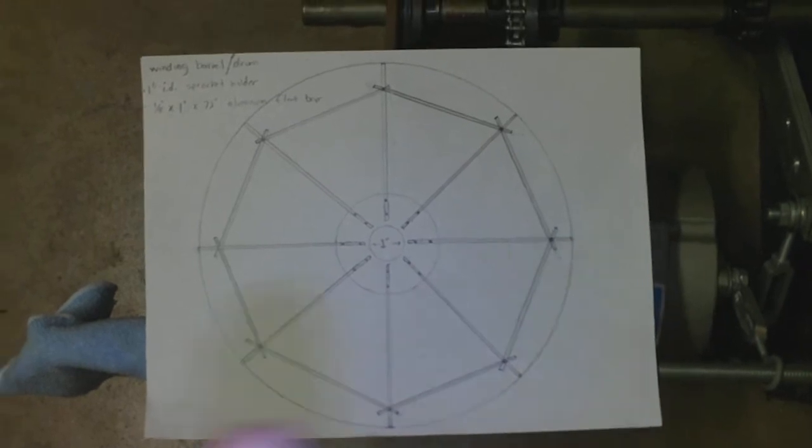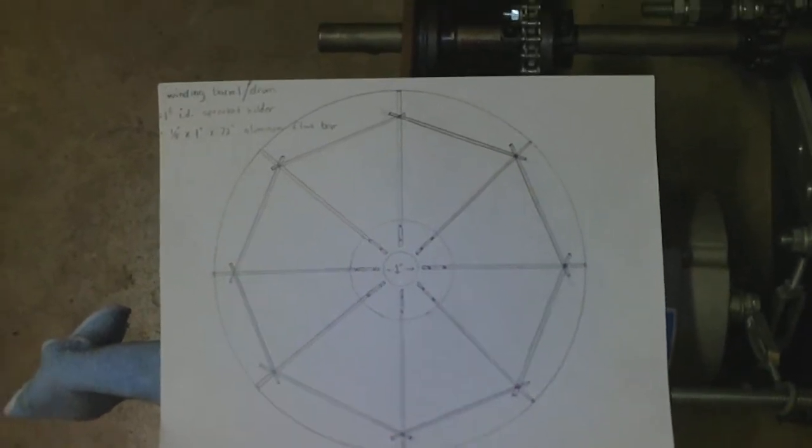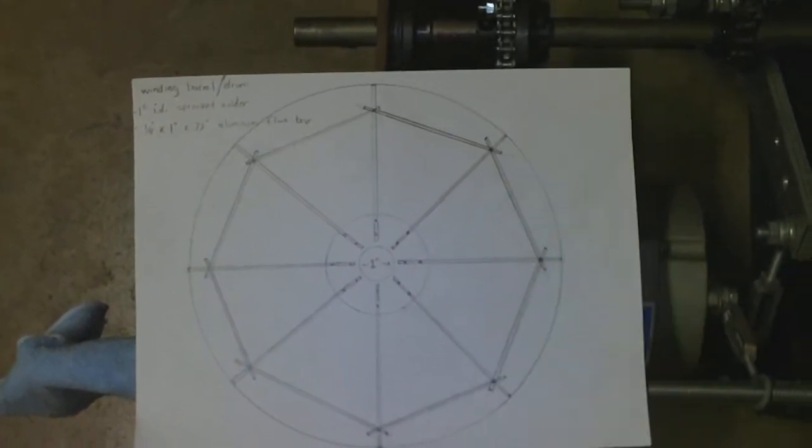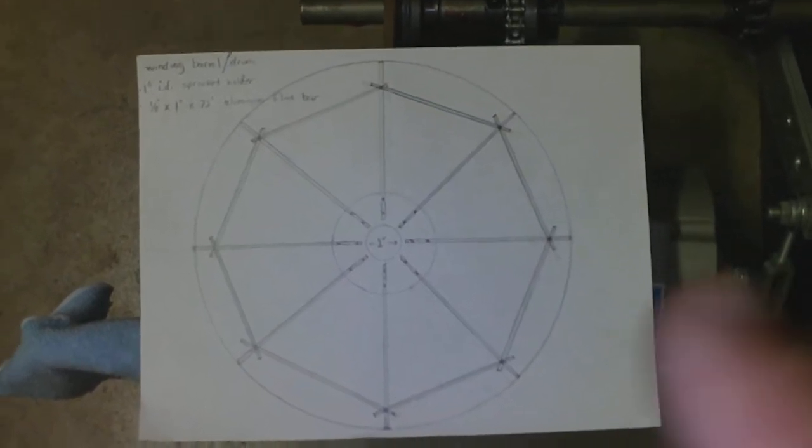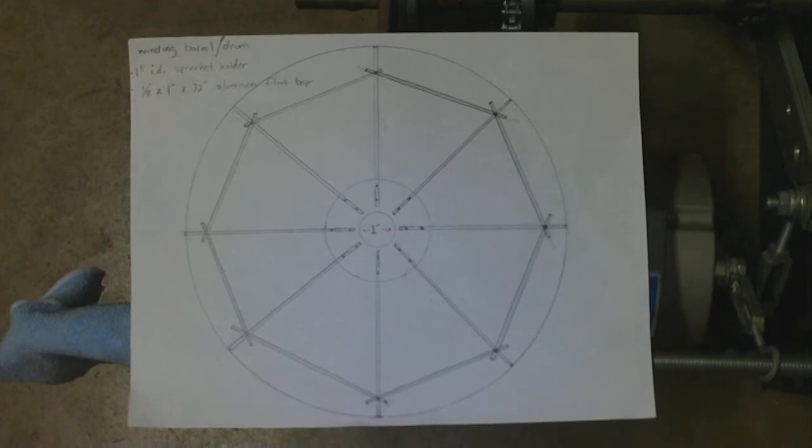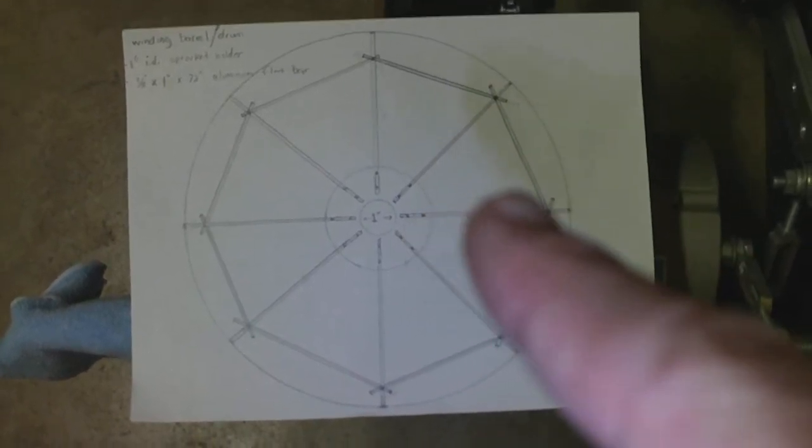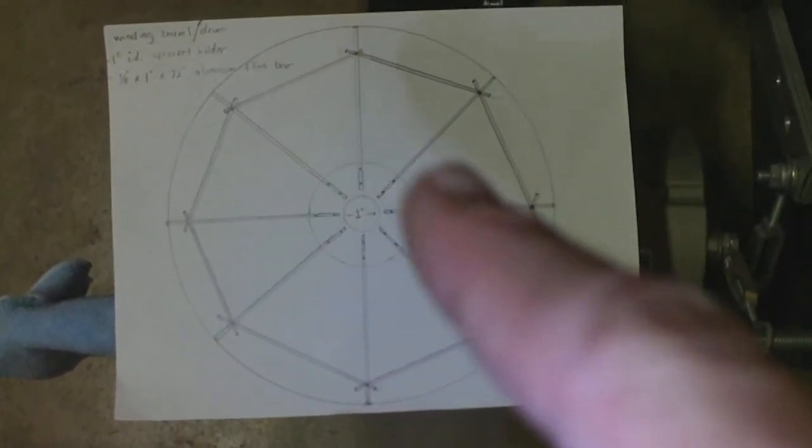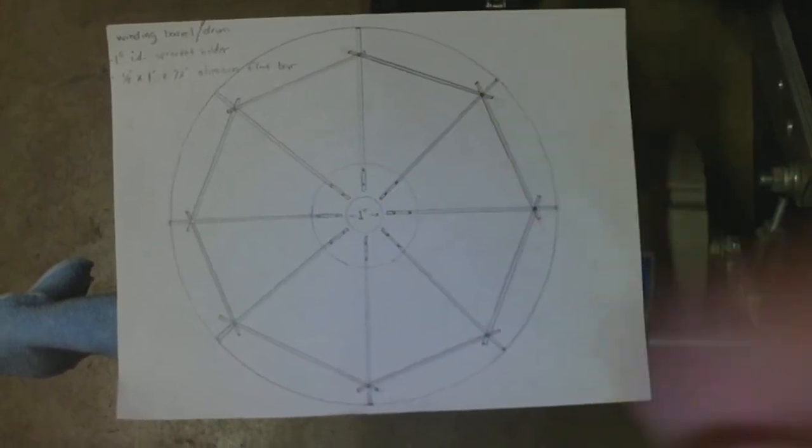So, it might be a 6-foot diameter wheel, so it's a pretty big wheel across, right? So, that's aluminum flat bar that's going to be drilled, secured to the middle with maybe a couple bolts on each of these pieces that go out.